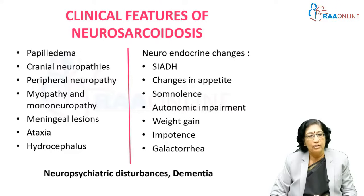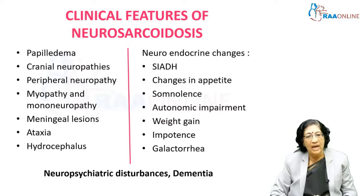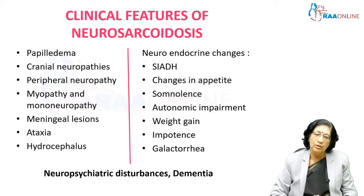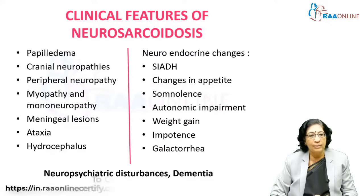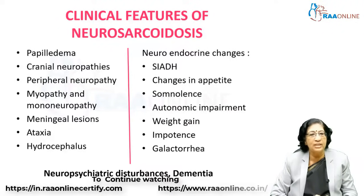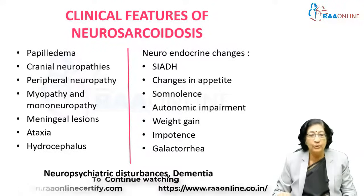Apart from this, neuropsychiatric disturbances like psychosis and dementia can also be present. Recently, I had a patient who presented with recurrent hyponatremia; on evaluation she was found to have SIADH. Her past history revealed she had been on treatment for sarcoidosis for quite some time, but since she had become asymptomatic the treatment was stopped two years prior. Now the sarcoidosis has flared up again and she has features of neurosarcoidosis.